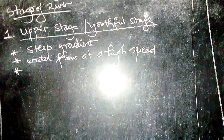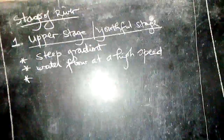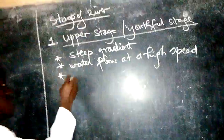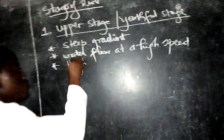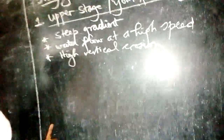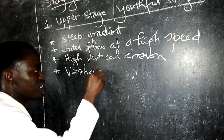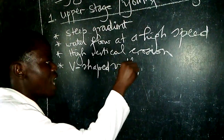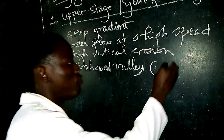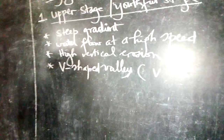Since the water is flowing at a very high speed, we have what we call high vertical erosion — the river erodes its bed. Because vertical erosion is taking place to a great extent, the valley formed at that place has a V-shape. The valley in this region is deepened, giving it that characteristic V-shape.